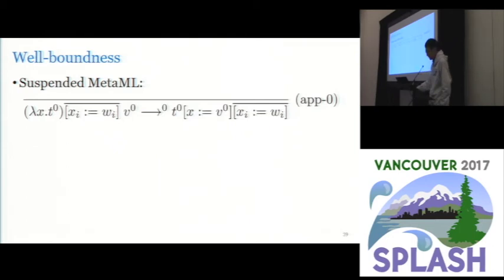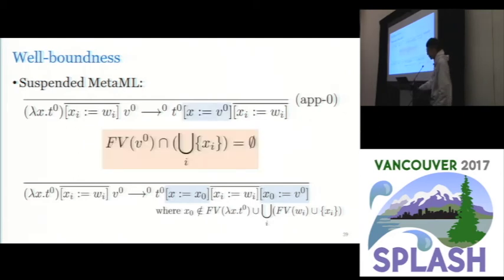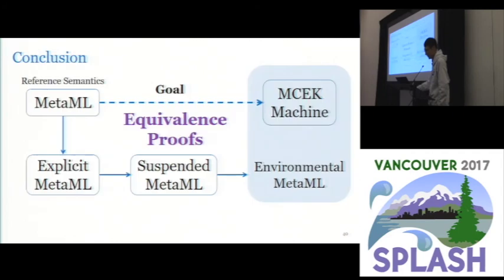So recall in suspended MetaML we have this application rule. We promote substitution for the lambda bound variable to the front. Well it seems more correct to do something like this. We first rename the lambda bound variable to a fresh variable and then we perform the substitution in the end. So can we somehow combine these two substitutions? It turns out that in order to do this we need to prove some properties. In the paper we introduce well-boundedness judgments to show that this property always holds when we call the application rule.